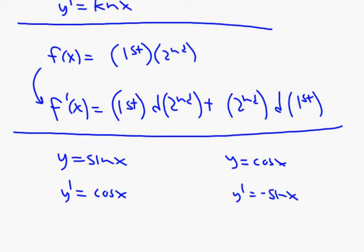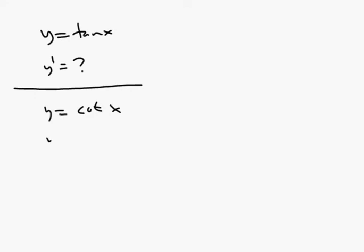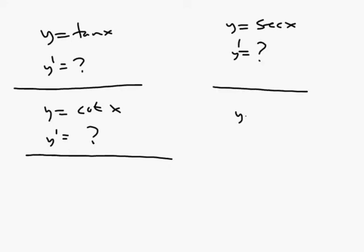So you start thinking about what things we don't know at this point. We don't know what happens if y is tangent x — what's the derivative? Or what about if y is cotangent of x? And then there are two more famous trig functions: y equals the secant of x, and y equals cosecant of x. We don't know those derivatives either. So that's going to be our goal today — to find the derivatives of those things.